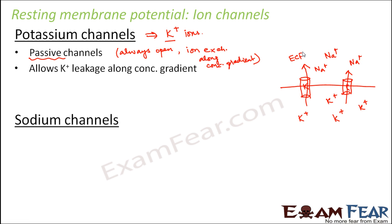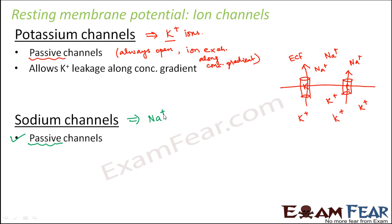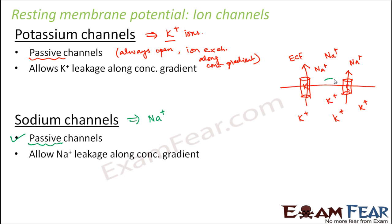The sodium channels are also passive channels — also open all the time — but they allow the passage of sodium ions along the concentration gradient. Since sodium concentration is high outside the axon in the extracellular fluid, these channels allow sodium ions to move from outside to inside. So potassium ions keep moving outside and sodium ions keep moving inside.